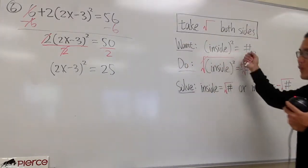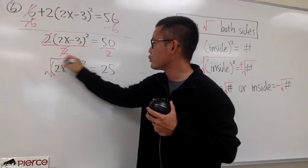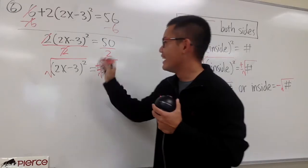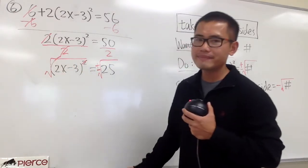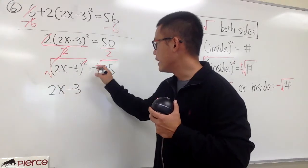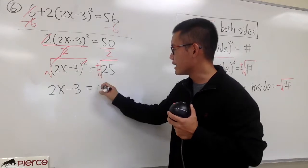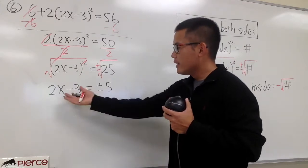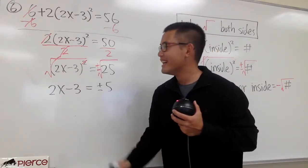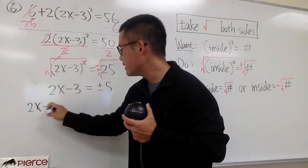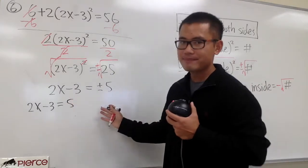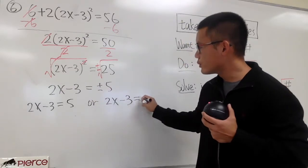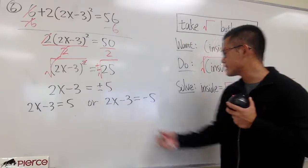This is exactly what we want. So now we can just take the square root right here, and likewise take the square root on the right side, and be sure you put a plus-minus with the number. On the left-hand side, the square and square root cancel, and we will have 2x minus 3, and this is equal to plus-minus the square root of 25, which is 5. This means we have two equations: 2x minus 3 equals positive 5, and 2x minus 3 equals negative 5.